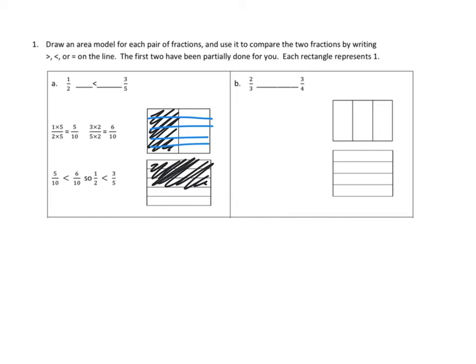Let's do the same thing on the bottom one. We've already divided into 3 fifths, but now we need to go ahead and do the vertical version and divide it in half. We used to have 3 fifths, and now we divide it in half — or multiply by 2 — and we have 6 tenths. So now we have like units: 5 tenths and 6 tenths. We know that 1 half is the same as 5 tenths and 3 fifths equals 6 tenths. When we have the same units — tenths — we know that 6 of them is greater than 5, so 5 tenths is less than 6 tenths.